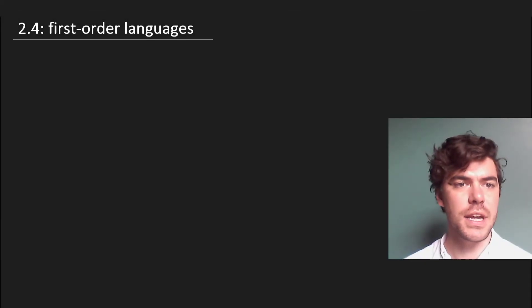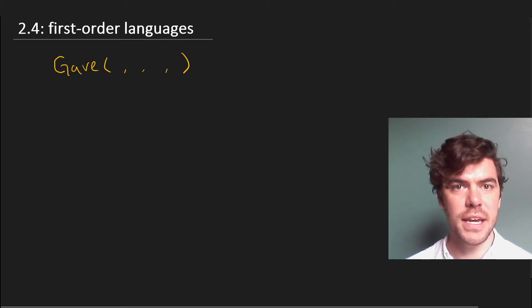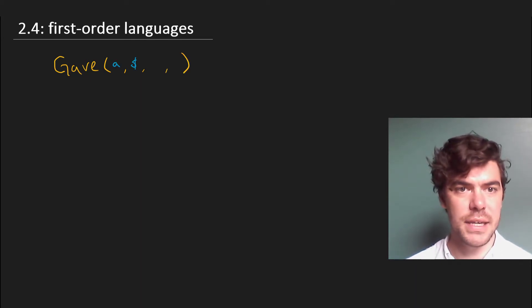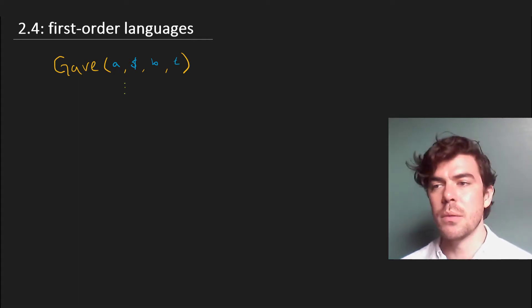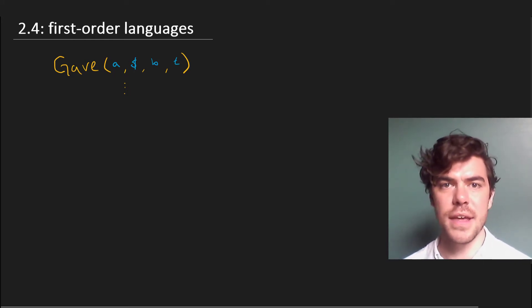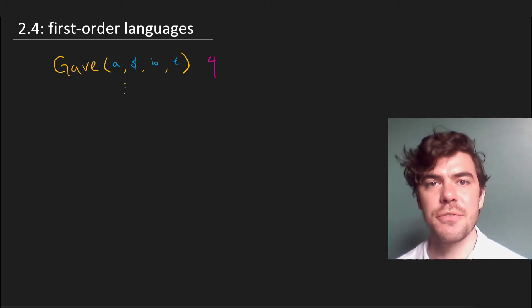We saw in the second lecture that there's no in-principle limit on the arity of a predicate. There we considered the slightly large and unwieldy gave with arity four, which takes four arguments in the form of, for instance, A gave money to B at time t. We could make these even more complex if we wanted to, but usually we don't, and at least for the purposes of this course, we're not going to see generally any predicates with higher than arity four, so don't worry. That's the first point.